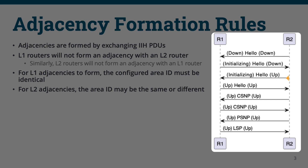Then R2 will send an IIH PDU back to R1, and this IIH PDU will now have R1's identifier in the list of neighbors, showing R1 that R2 has received its IIH PDU and agrees to form an adjacency. Once R1 receives this, R1 will transition its neighbor entry for R2 to an up state.